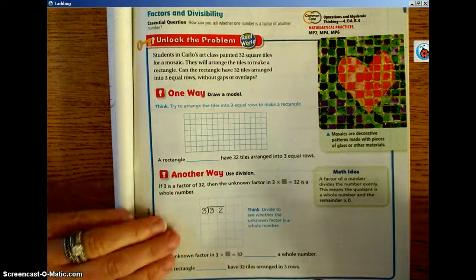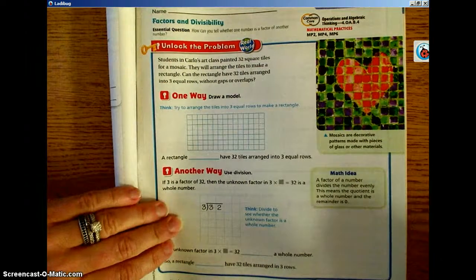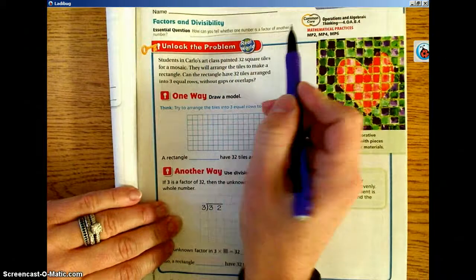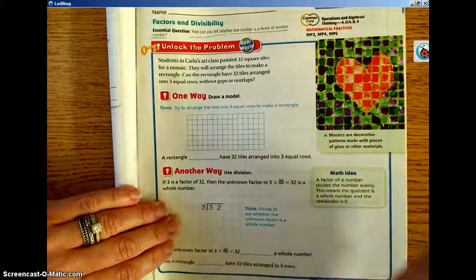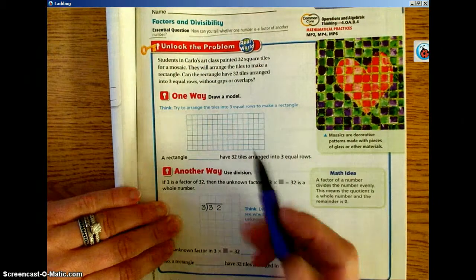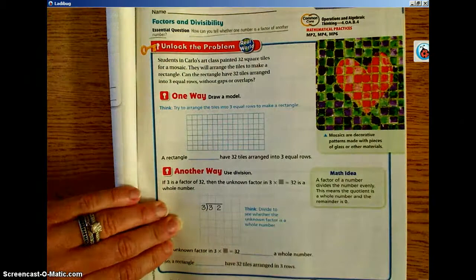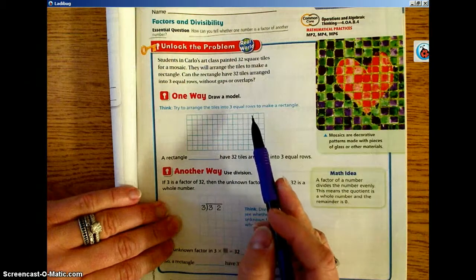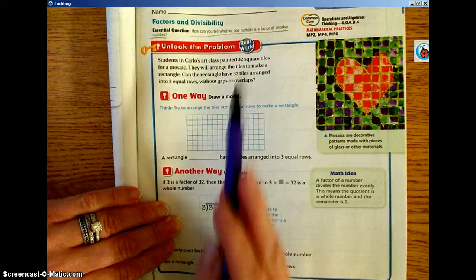Welcome to your flipped lesson for 5.2. Today our essential question is, how can you tell whether one number is a factor of another number? Remember we talked yesterday about factors, so today we're going to go a step further and make that determination of whether a factor can be a factor of another number.